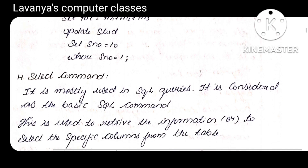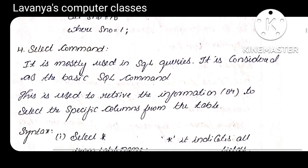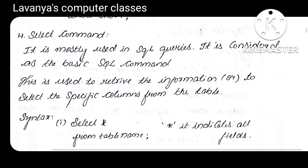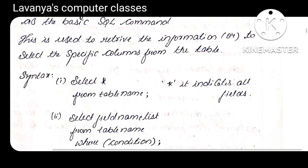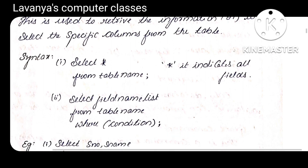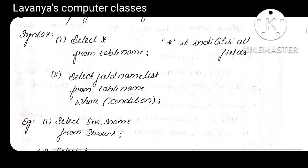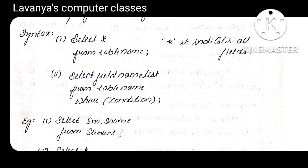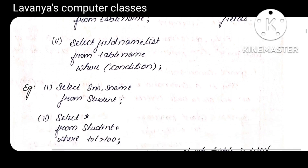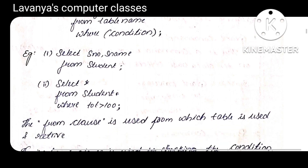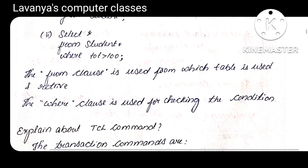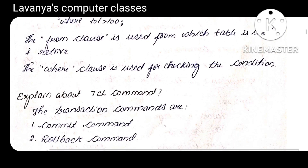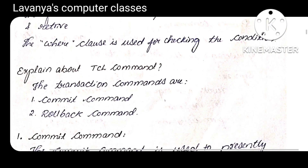The last DML command is SELECT. The SELECT command is used for retrieving information from the table. Syntax: SELECT * FROM table_name — the star indicates all rows and all columns. Or if you want to select a few fields: SELECT field_name1, field_name2 FROM table_name WHERE condition. Either with or without a WHERE condition we can select data from the table.